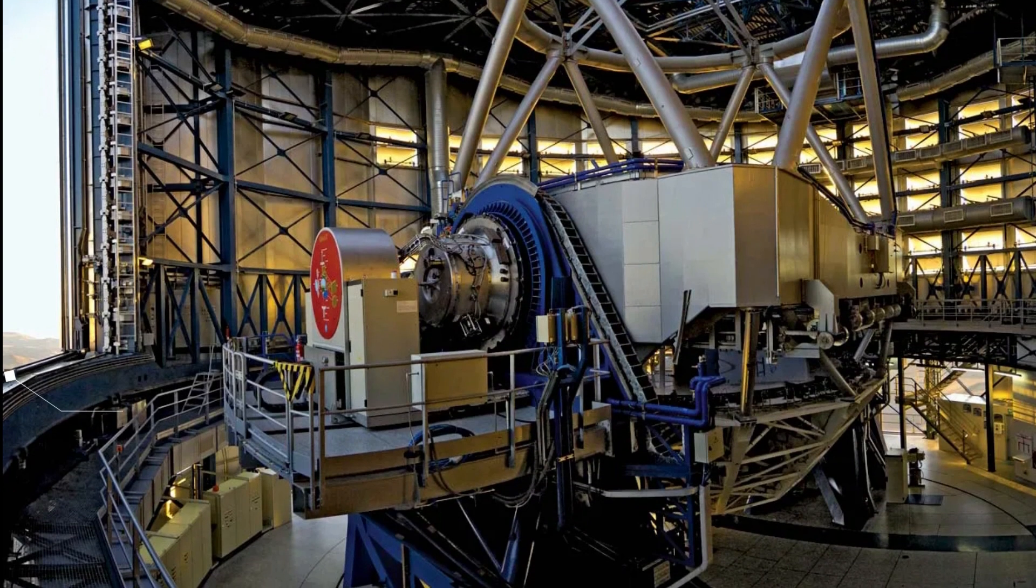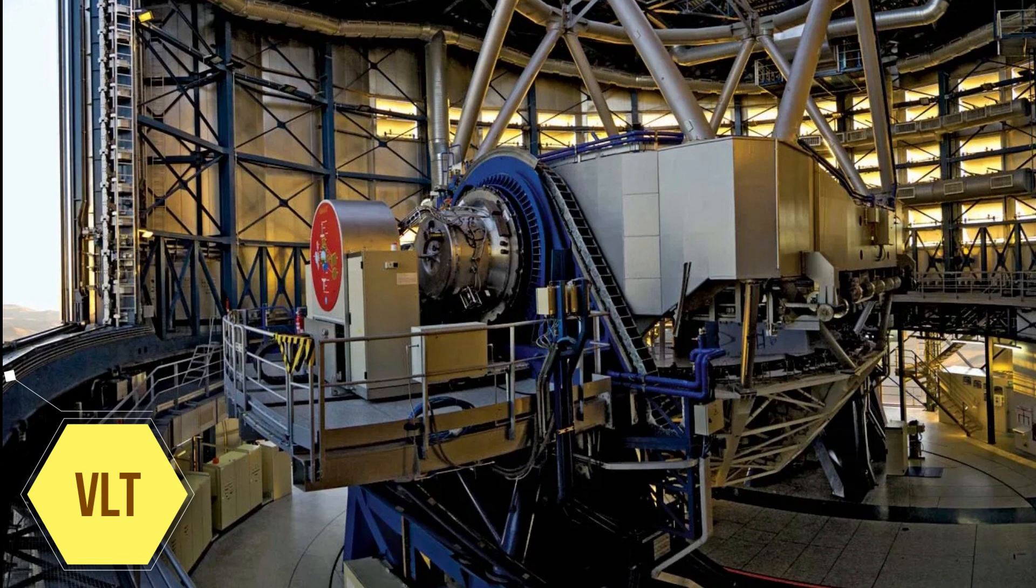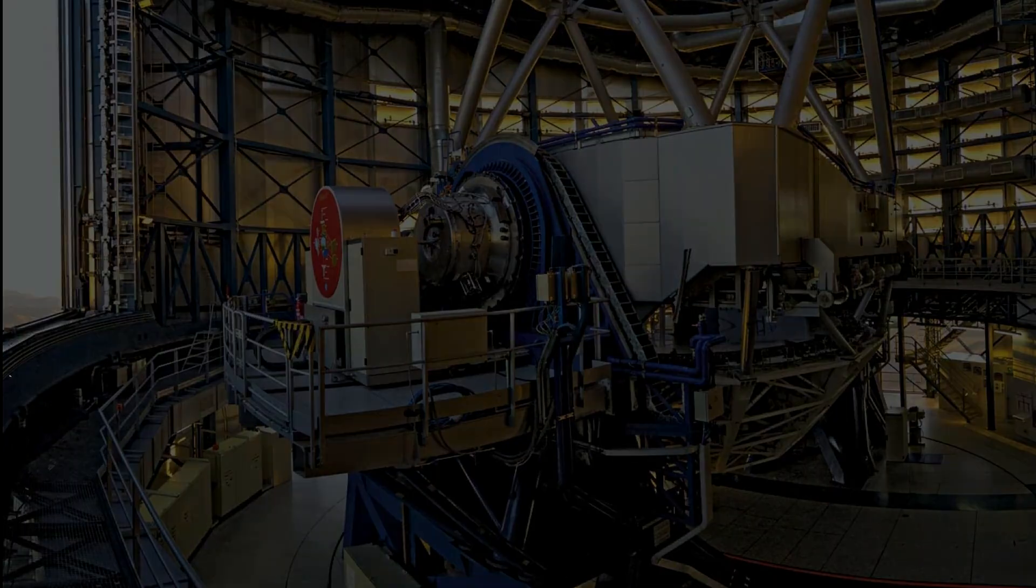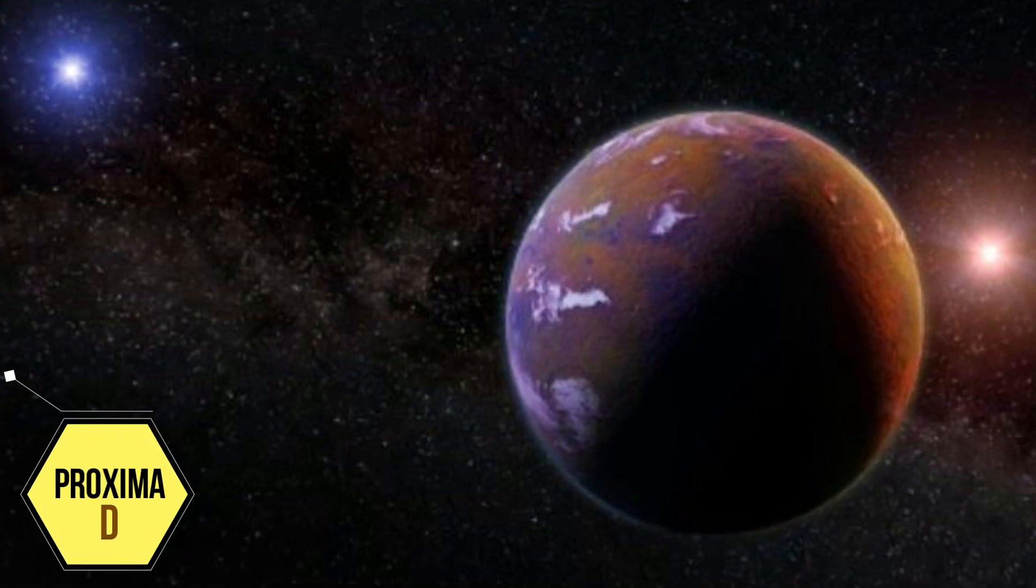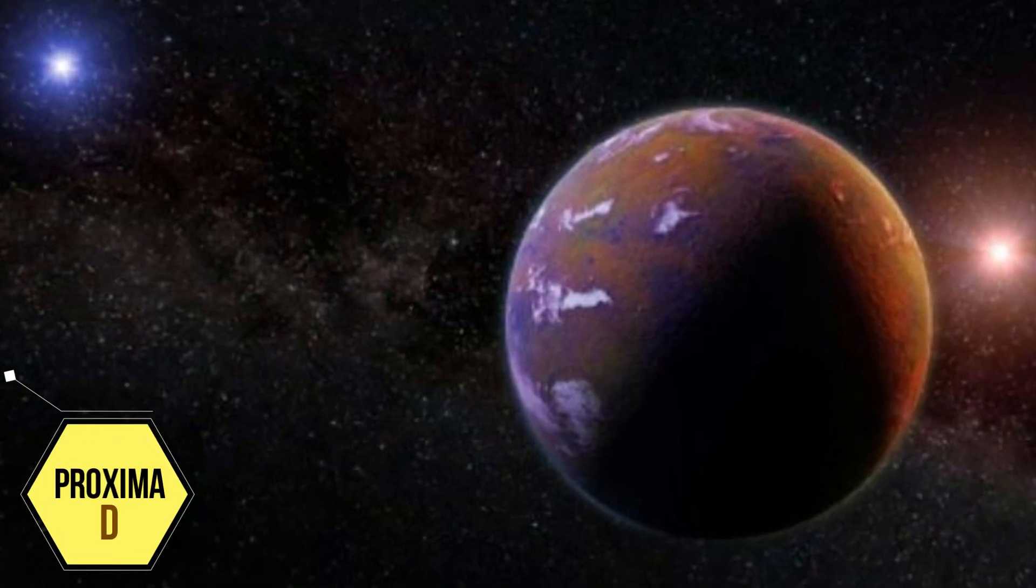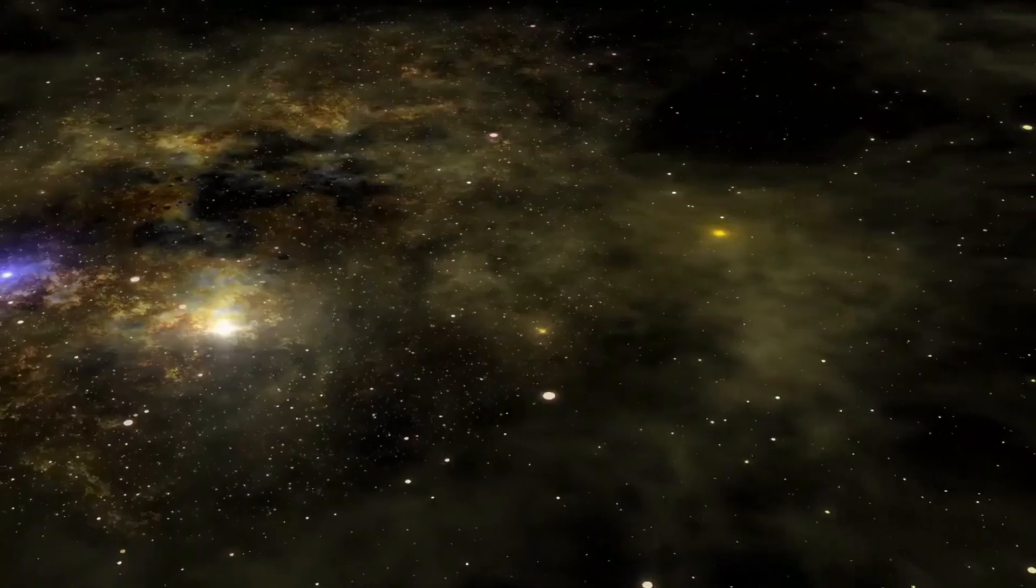And now, on February 10, 2022, researchers using the European Southern Observatory's Very Large Telescope said they found a third planet next door. The planet, Proxima d, is only one-quarter the mass of Earth and one of the smallest and lightest exoplanets discovered so far.